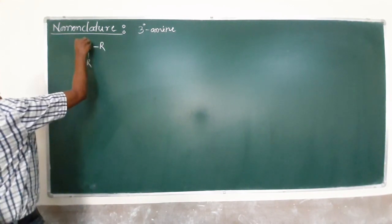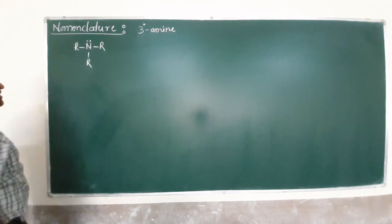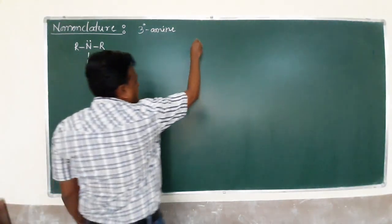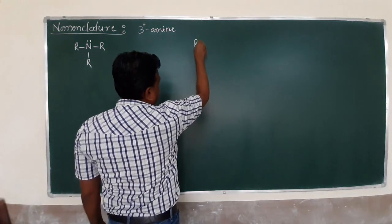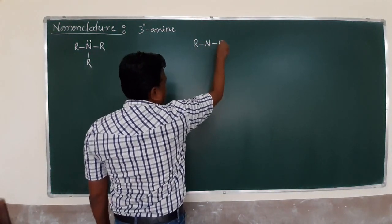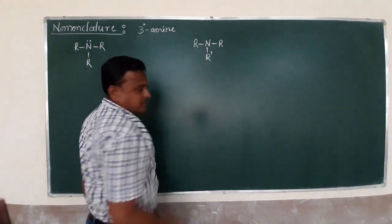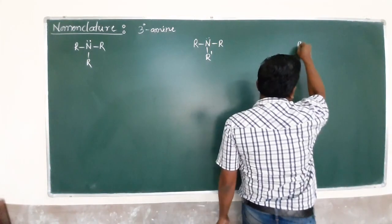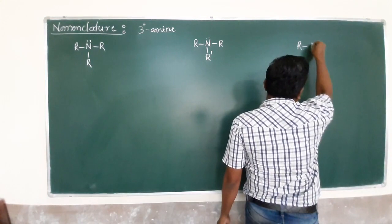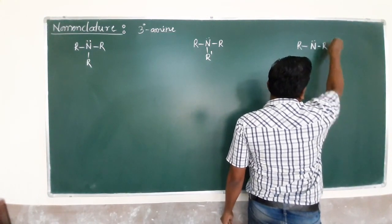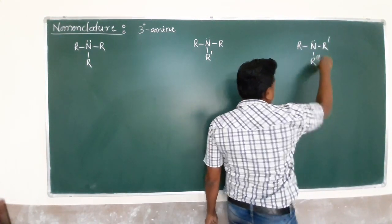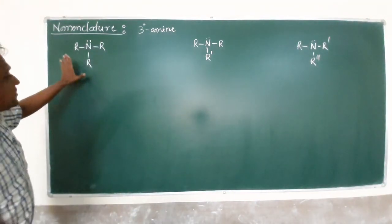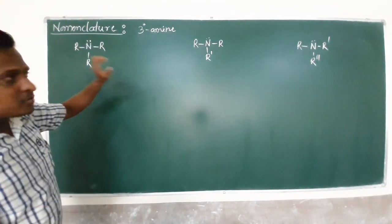One is R3N, where all three alkyl groups are the same. The second is where two alkyl groups are the same and one is different. And the third is where all three alkyl groups are different. So tertiary amines are mentioned in three different types.